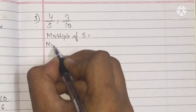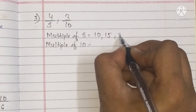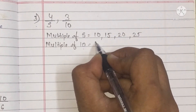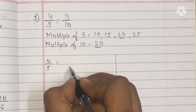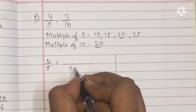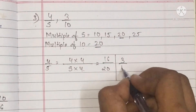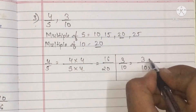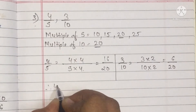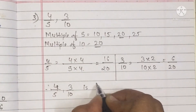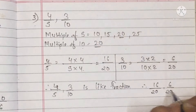Question number 3 is 4 upon 5 and 3 upon 10. We try to find a common denominator to make like fractions. The table of 5: 5, 10, 15, 20, 25; the table of 10: 10, 20 — so 20 is common. For 4 upon 5, multiply by 4: 4 fours are 16 and 5 fours are 20. For 3 upon 10, multiply by 2: 3 twos are 6 and 10 twos are 20. So 4 upon 5 and 3 upon 10 become 16 upon 20 and 6 upon 20.